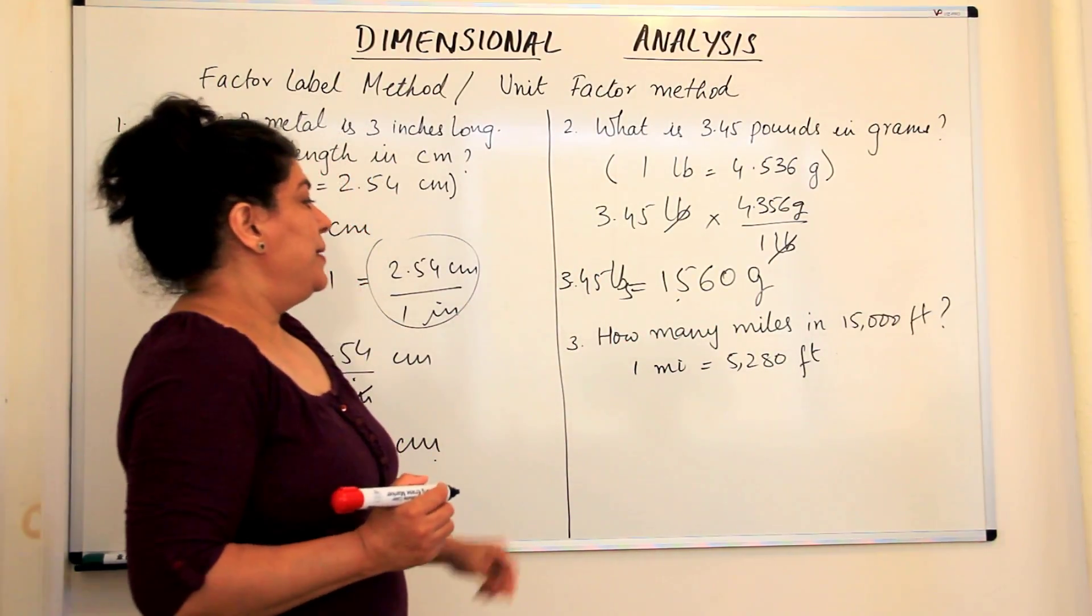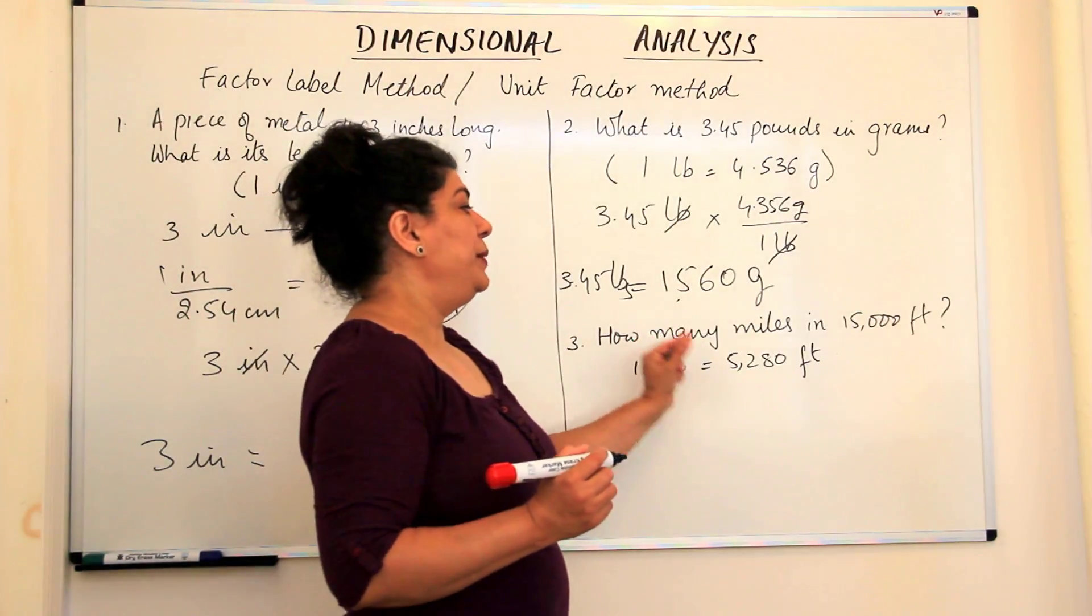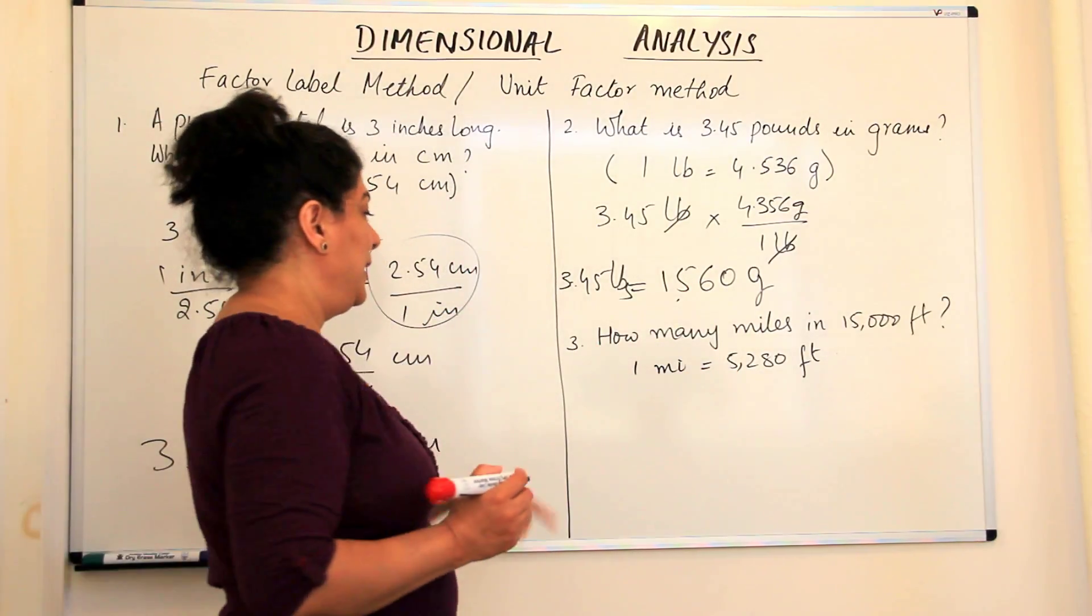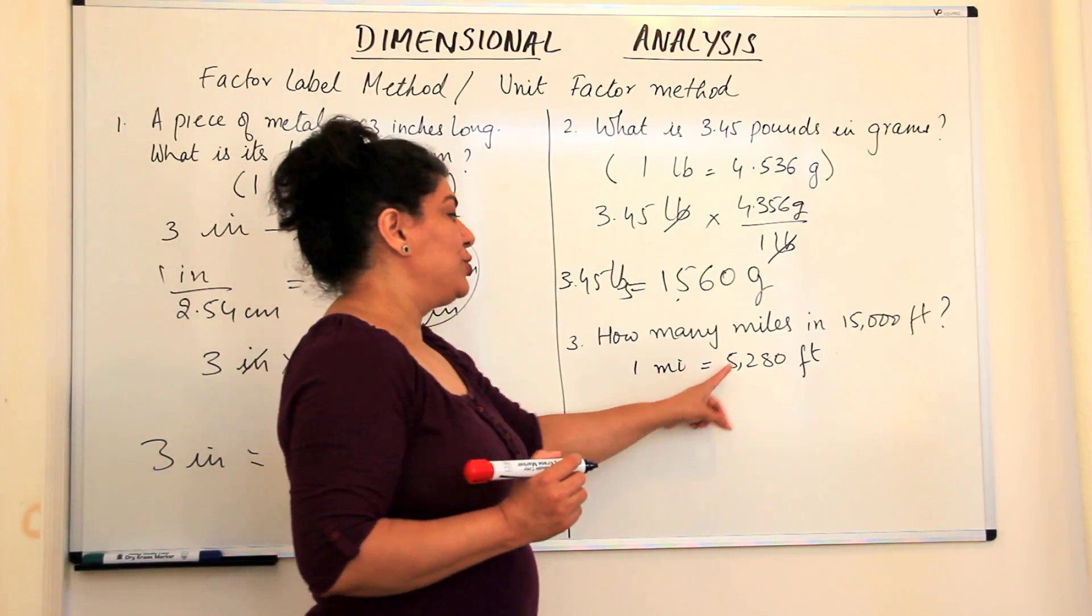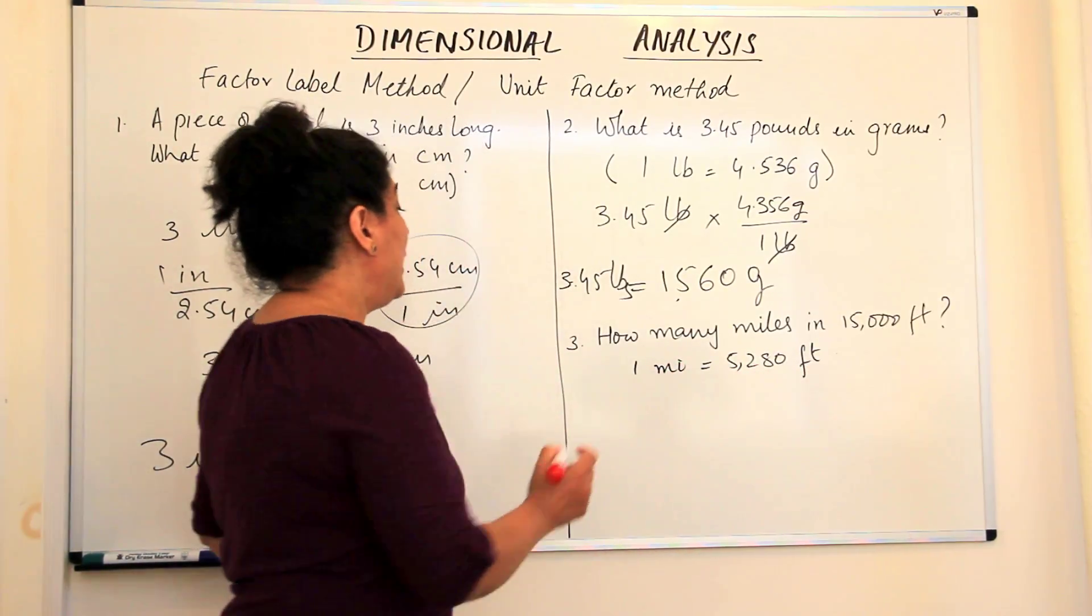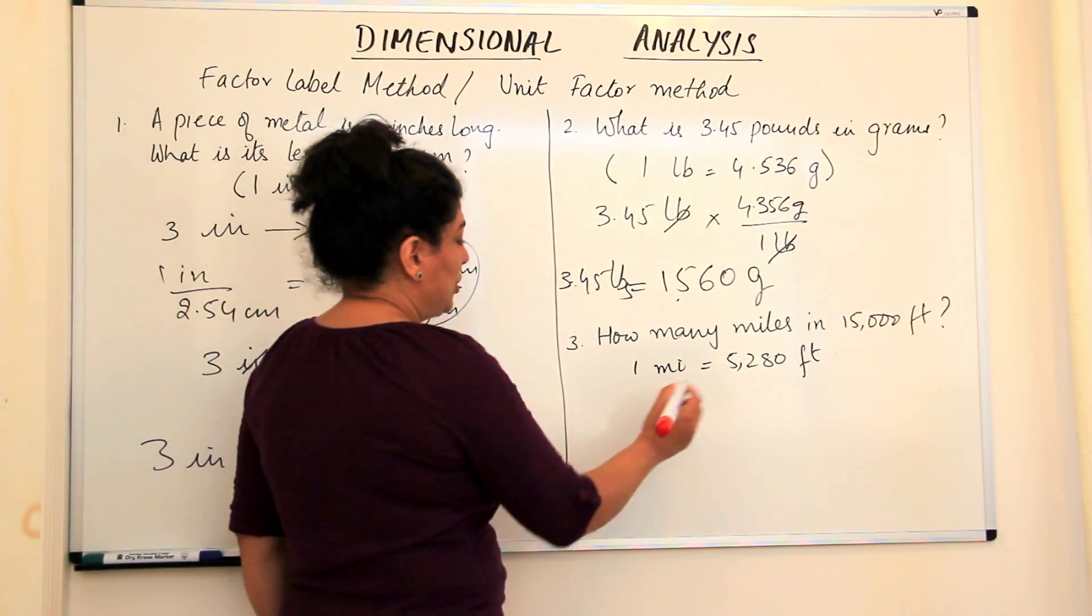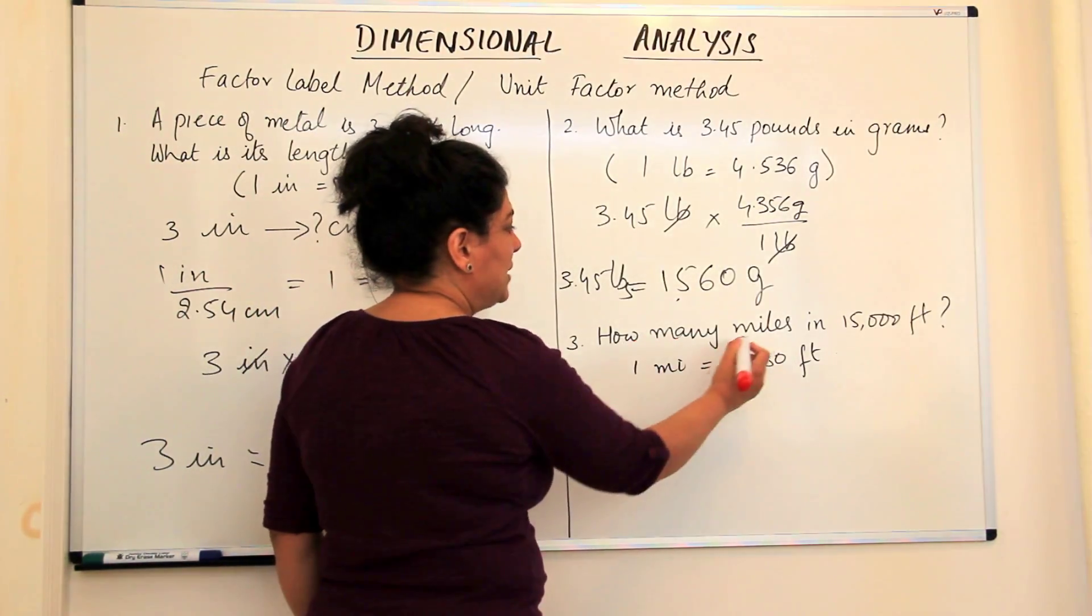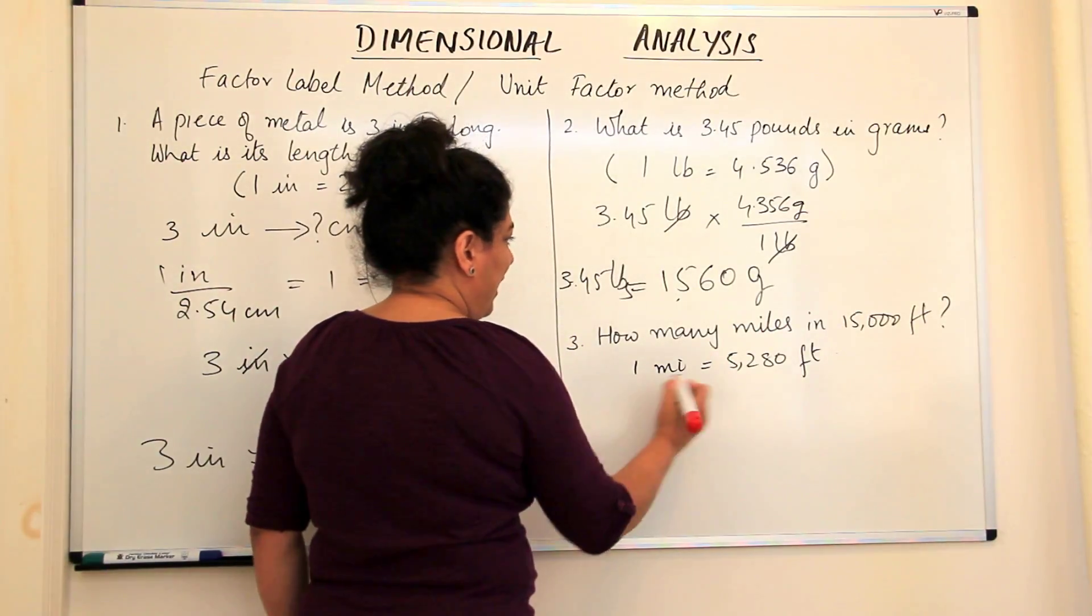The next problem is: how many miles would be there in 15,000 feet? One mile is equal to 5,280 feet. So what are the two unit factors that we'll get? We have feet.